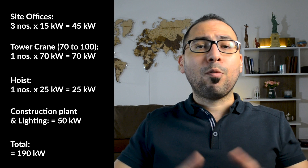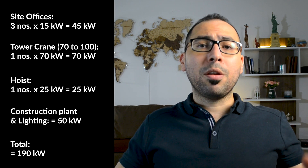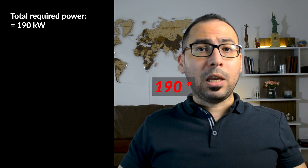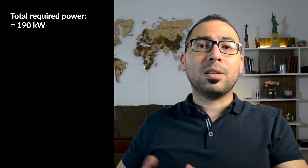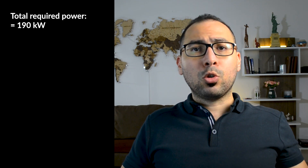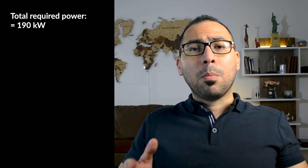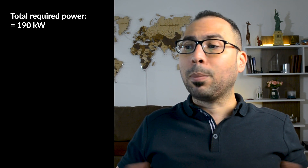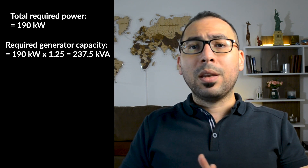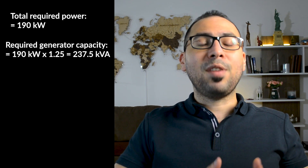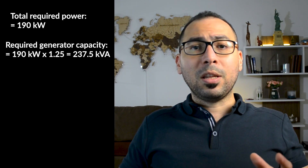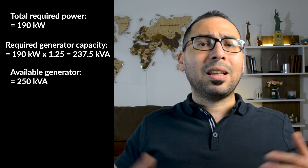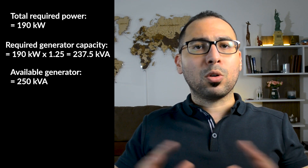I need an actual power of 190 kilowatts to run my project. To get that, I need a generator of a specific capacity — this is the apparent power. The apparent power is equal to the actual power multiplied by 1.25. So 190 kilowatts multiplied by 1.25 gives 237.5 kVA. KVA is the unit for apparent power and for generators.